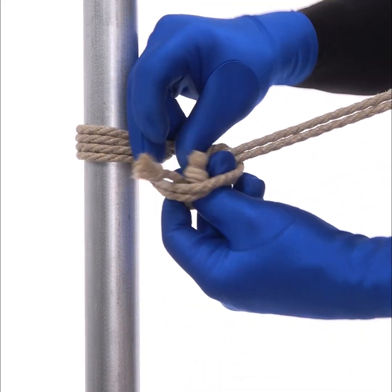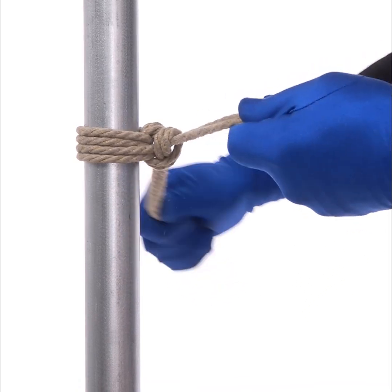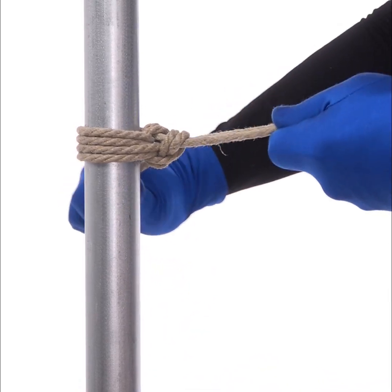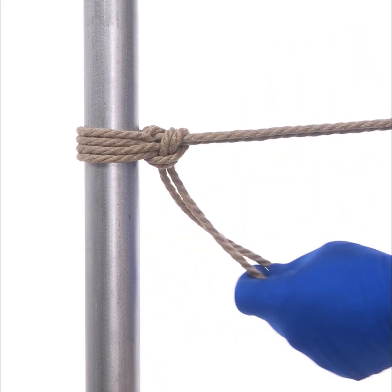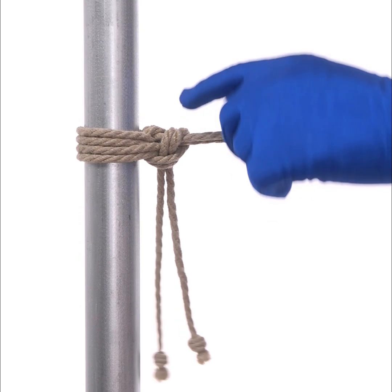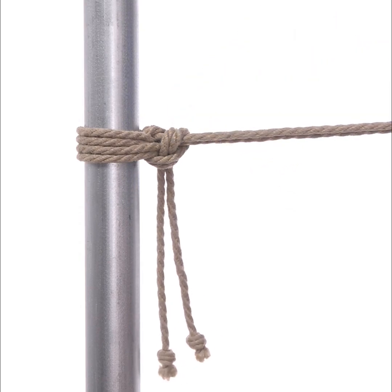Once that's done, go around again to add your second half hitch to lock it off tightly. Just like with the round turn two half hitch, if you have quite a lot of rope left over here, you can slip this second hitch.